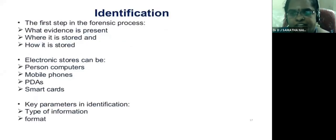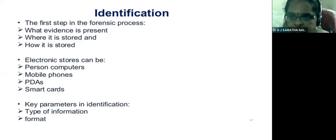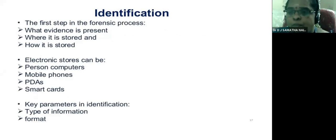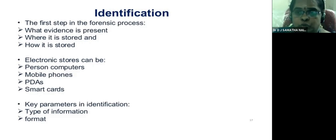What is identification? The first step in the forensics process determines what evidence is present, where it is stored, and how it is stored. At the time of an incident, we collect evidence such as CCTV footage and fingerprints. Evidence can be stored in JPEG images or in encrypted formats, and may be stored in a particular forensics software. Electronic devices available include personal computers, mobile phones, PDAs, and smart cards.